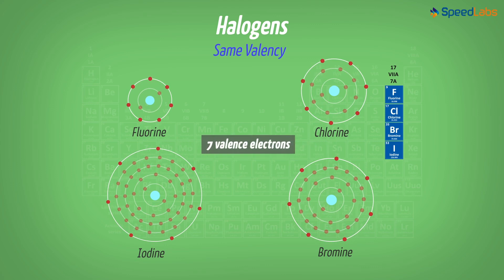So what will be the valency of each of these four elements? Of course, one. Because accepting one electron will be much simpler than donating seven, right? Similarly, all the elements belonging to any particular group will have the same valency.